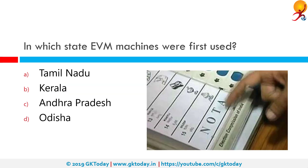In which state were EVM machines first used? The correct answer is Kerala. They were first used in 1982 in the by-election to North Paravur Assembly Constituency in Kerala for a limited number of polling stations. The EVMs were first used on an experimental basis in selected constituencies of Rajasthan, Madhya Pradesh, and Delhi.